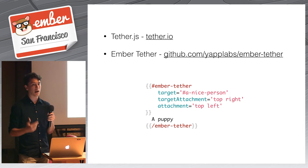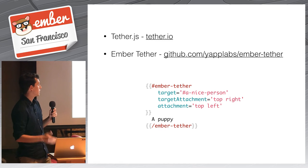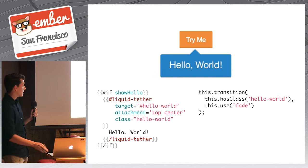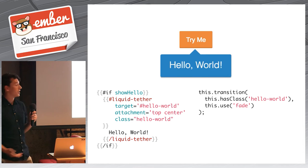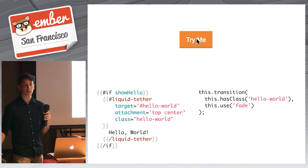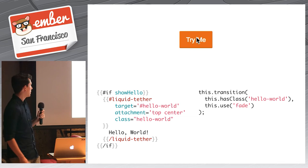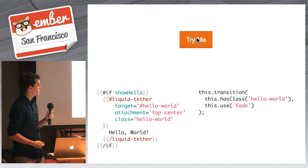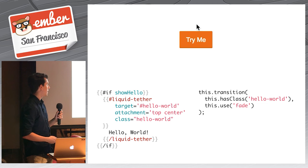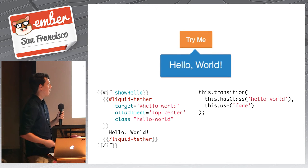After spending a while trying to combine the two, I decided to make a library that would do it for you. So without further ado, let's take a look at Liquid Tether. The API is very similar to Ember Tether. You can actually use this as a drop-in replacement at any point. If you don't have Liquid Fire yet but expect to in the future, you can use Ember Tether for now, then install Liquid Tether later and just do a find and replace. You use it just like any other Liquid Fire helper — select the Liquid Tether using its class and give it a transition.